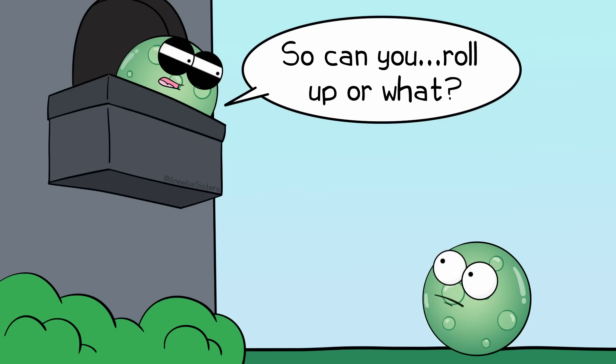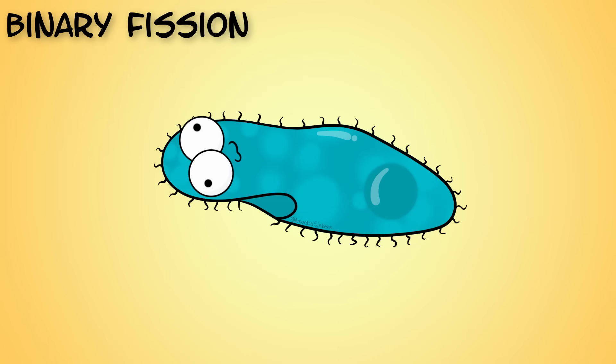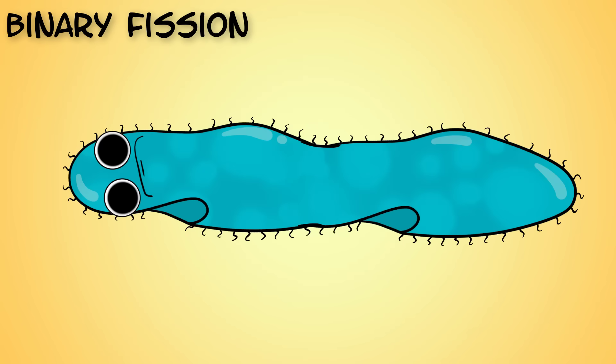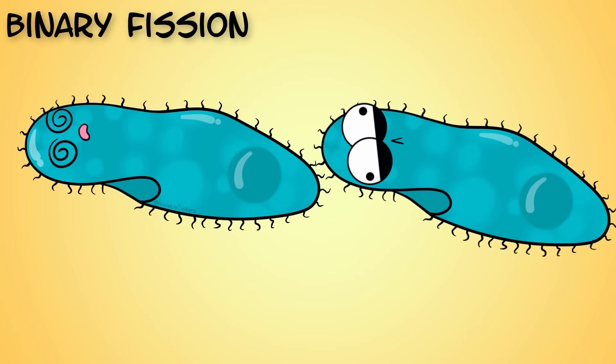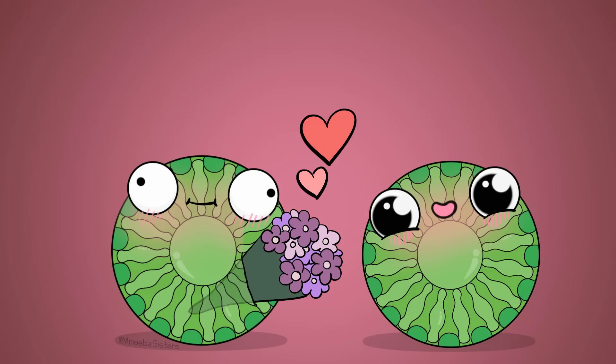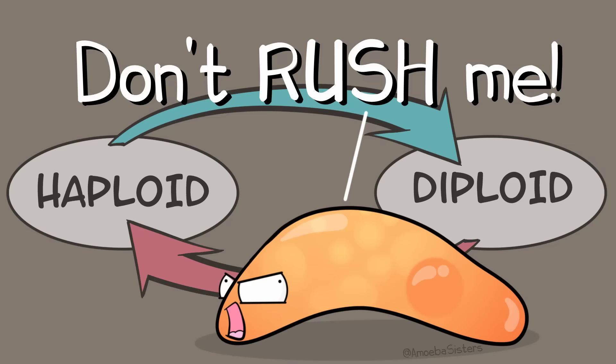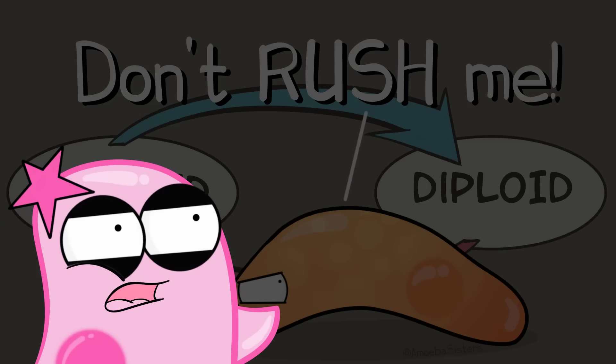Protist reproduction is actually very complex, and we'd need another video to cover it. Some do binary fission, a simple asexual process of just splitting that we talked about in our bacteria video. But many do sexual reproduction too. Some protist life cycles include lengthy haploid and diploid stages, especially in some of the parasitic types of protists.